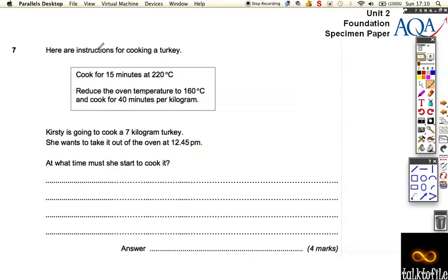Okay, let's look at number seven. Here we've got some cooking instructions. For a turkey, it takes 15 minutes plus 40 minutes per kilogram. Kirsty's going to cook a 7 kilogram turkey and she wants to have it finished by 12:45 PM in the afternoon.